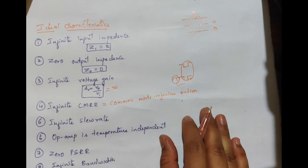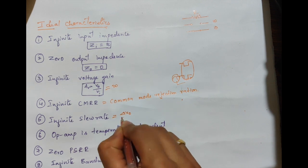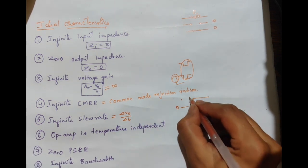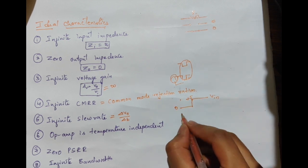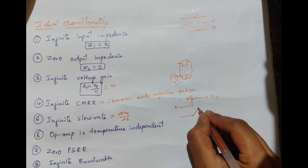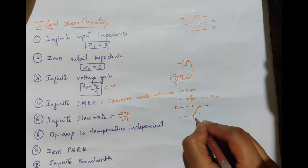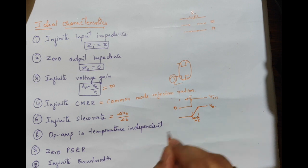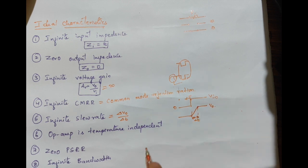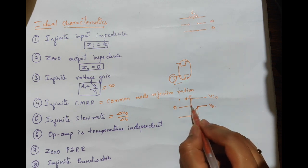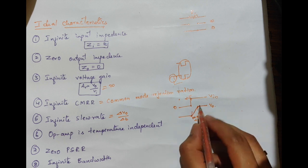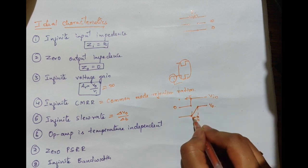Next is the infinite slew rate, where slew rate refers to the rate of change of output voltage with respect to time. If the input voltage changes from zero to five volts, the output voltage will not change suddenly but will rise slowly until it reaches five volts with a time delay. This delay exists because a sudden change in output voltage could damage the operational amplifier.